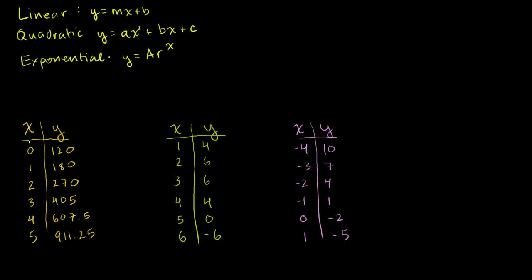In all of these examples, as we go from one data point to the next, we're increasing x by 1. It's very important to pay attention to that. So let's look at our change in y's. When we go from the first to the second data point, our change in y is 60. Second to third, our change in y is 90. So that immediately tells us we're not dealing with a linear function — the change in y here is 60, then 90, then 135. This one is clearly not linear.